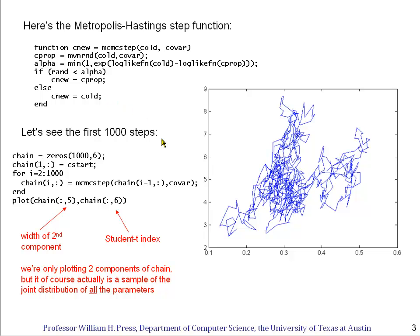Let's see how this does on the first 1,000 steps. We fill a Markov chain of length 1,000 where each step holds values for all six parameters. The first row is the starting values, and we fill in the chain by successive calls to the MCMC step function. Let's plot two components: the width of the second component and the Student t-index. The chain wanders around in this space, and from the theory, if we let it run long enough, it will fill the distribution ergodically — visiting any position in proportion to the Bayes posterior probabilities of those parameters.